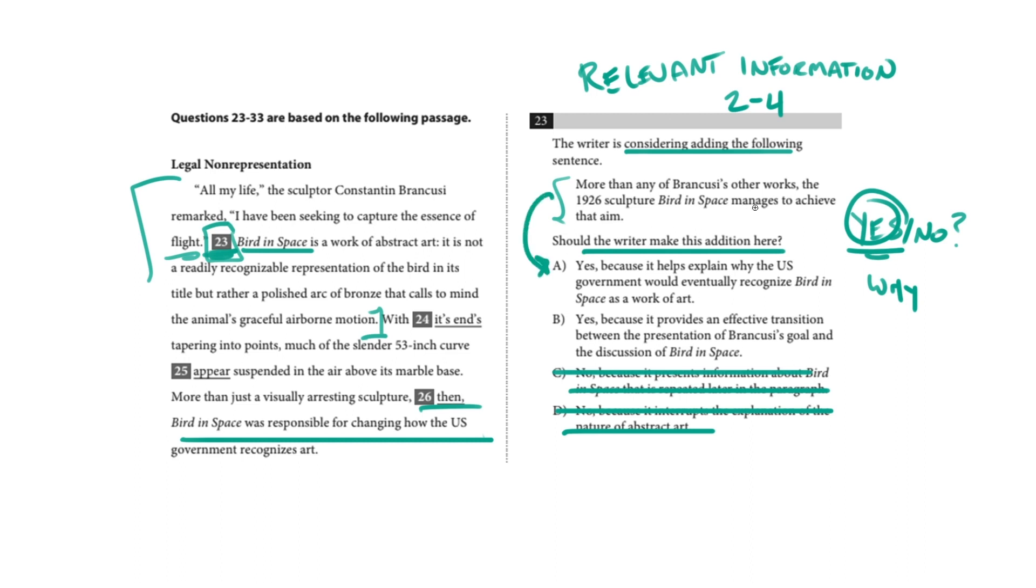That may be part of the same paragraph, but it's not part of the immediate context of where the sentence is supposed to go. And at any rate, I don't think that's what this sentence does. Ask yourself when you're looking at the addition, what does this sentence do? And earlier, I said it introduces the idea of the statue. So, let's look at choice B. Yes, it should be inserted because it provides an effective transition between the presentation of Brancusi's goal and the discussion of Bird in Space. And this, the word transition, is very similar to my notion that it introduces the idea of the sculpture. So, I'm going to say B is our answer.